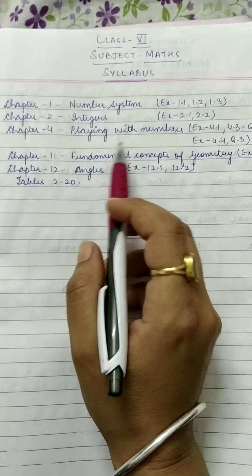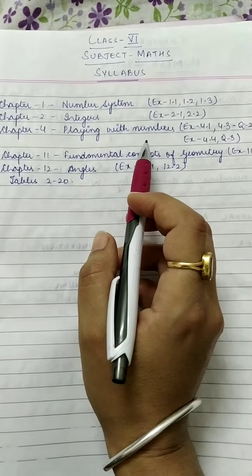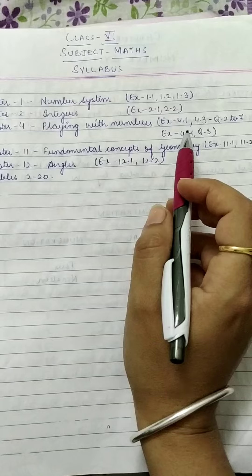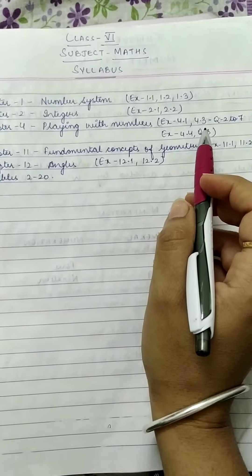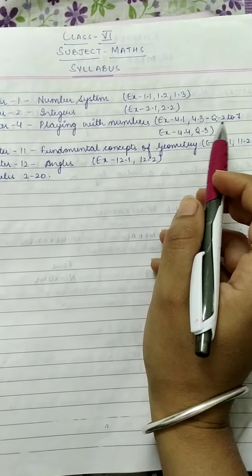Next is Chapter 4: Playing with Numbers. In this chapter, Exercise 4.1 is there. Exercise 4.3, only questions 2 to 7. Exercise 4.4, only question 3.